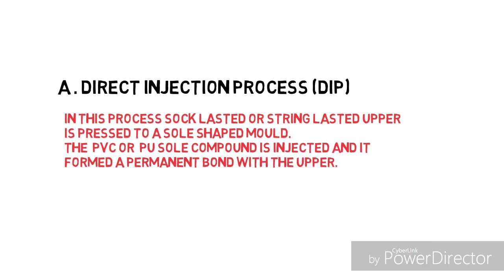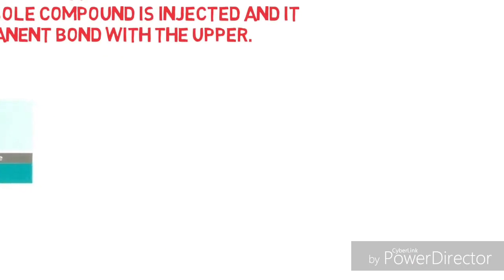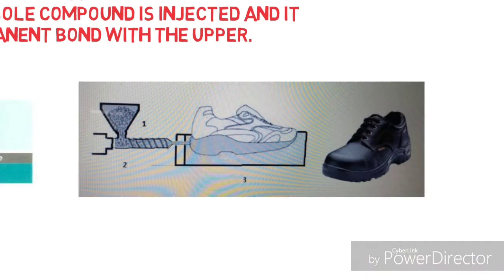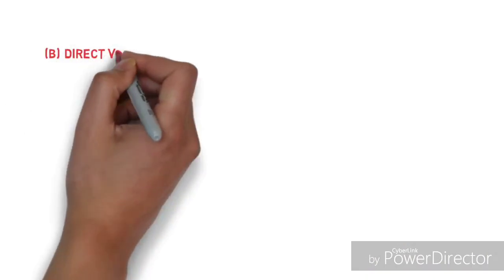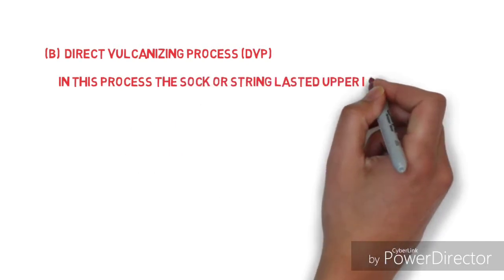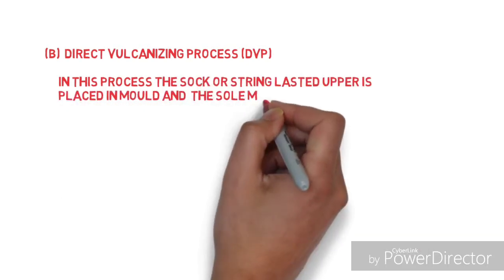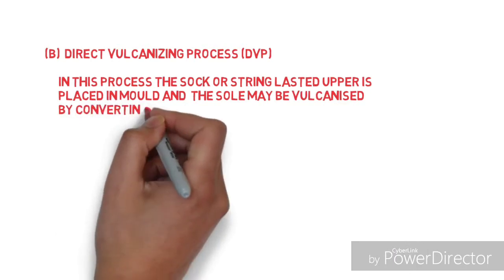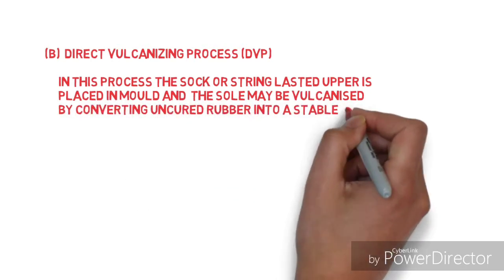Direct vulcanizing process (DVP): In DVP, the sock lasted or string lasted upper is placed in a mold and the sole may be vulcanized by converting uncured rubber into a stable compound by heat and pressure.